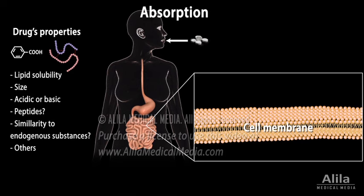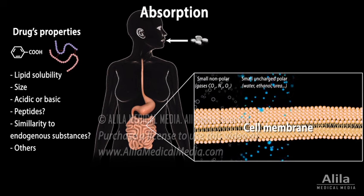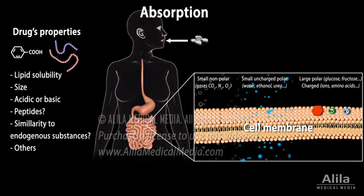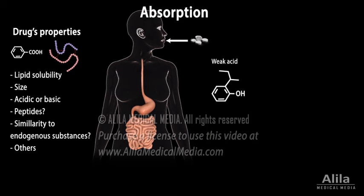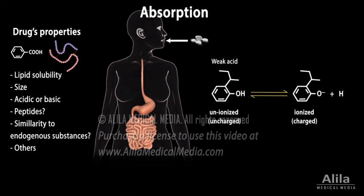Cell membranes consist mainly of lipids and are therefore hydrophobic. They are permeable to small nonpolar and uncharged polar molecules, but nonpermeable to large polar molecules and charged particles. Most drugs are weak organic acids or bases. They alternate between unionized and ionized forms, depending on the pH of the surrounding environment. The unionized form is usually lipid-soluble and can diffuse across cell membranes, while the ionized form cannot. A weak acid exists predominantly in unionized form in the low pH of the stomach, so it absorbs readily through the gastric mucosa. A weak base, on the other hand, absorbs more easily in the small intestine where the pH is higher.